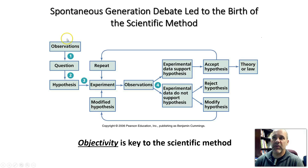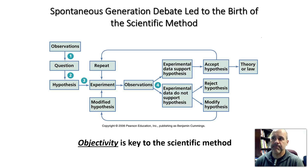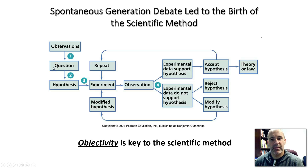The scientific method always starts with observations about some phenomenon in the world, and it causes you to come up with a question that you want to answer. For example, back earlier in the 1900s, people were probably noticing that smokers had a tendency to develop lung cancer. So that would lead to a question: does smoking tobacco products increase your chance for developing lung cancer?